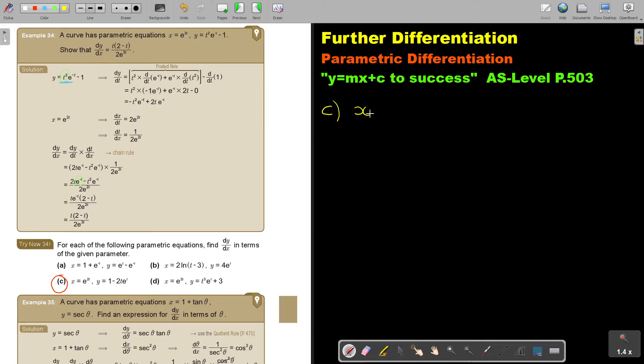And so this is x equals e to t. And this is y equals 1 minus 2t, e to the power of t.